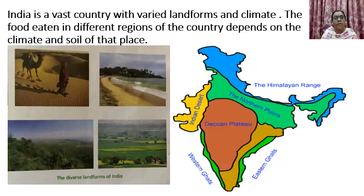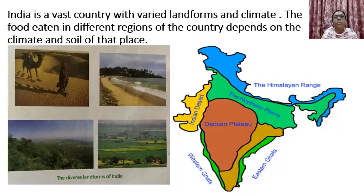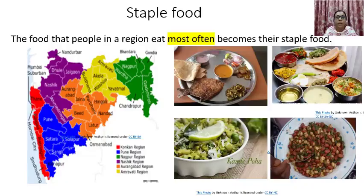The food eaten in different regions of the country depends on the climate and soil of that place. Food habits of different regions of India depend on the landforms of India. The food that people in a region eat most often becomes their staple food — 'most often' means most of the time.